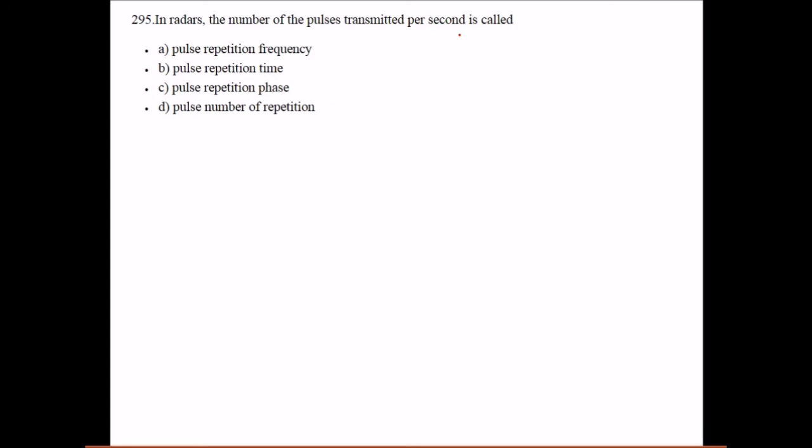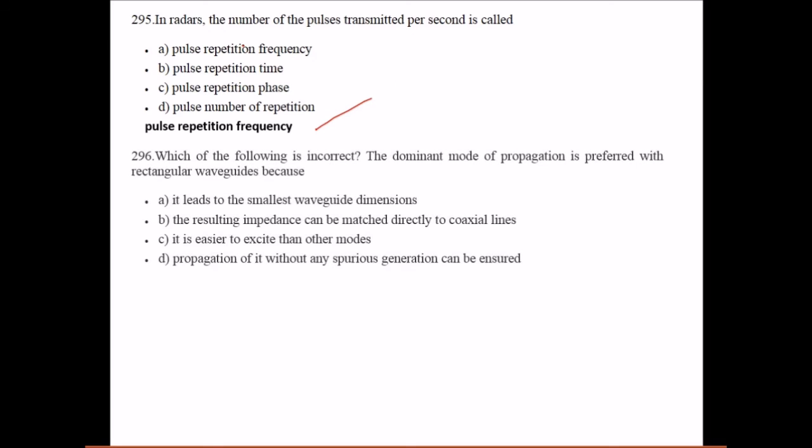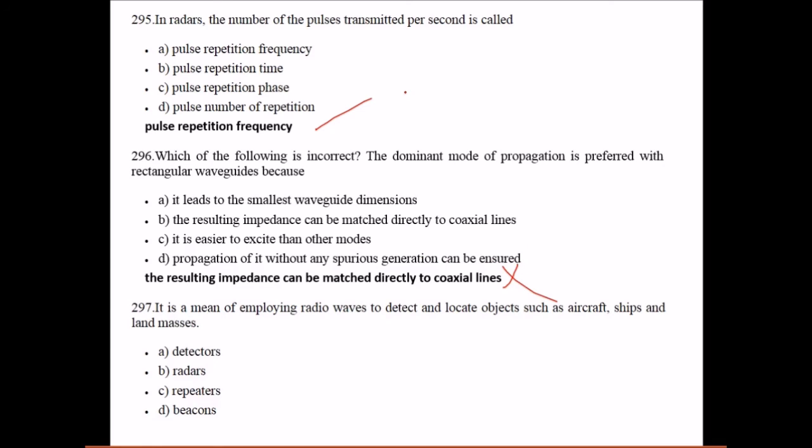In radars, the number of pulses transmitted per second is called pulse repetition frequency. Which of the following is incorrect? The dominant mode of propagation is preferred with rectangular waveguides because the resulting impedance can be matched directly to coaxial cables - this is wrong. It is a means of employing radio waves to detect and look at objects such as aircraft, ships, and land masses. What is this? Radar.